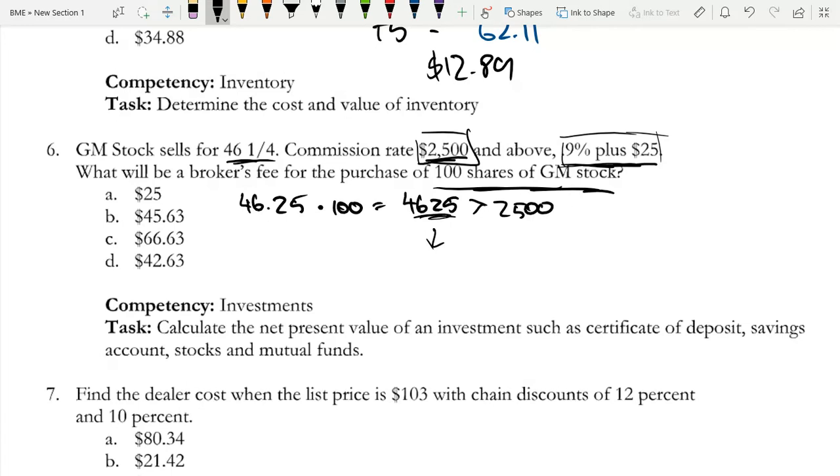So you are earning, so we have plus 25 and 0.9% of 4,625. 4,625 times 0.009 is 41.625. And now if we add 25 to that, we get 66.625, and that rounds to $66.63.